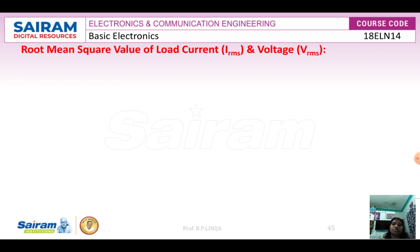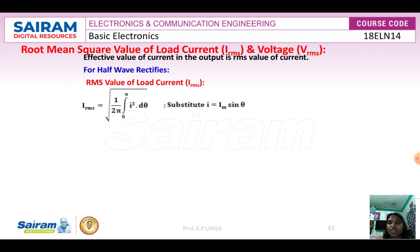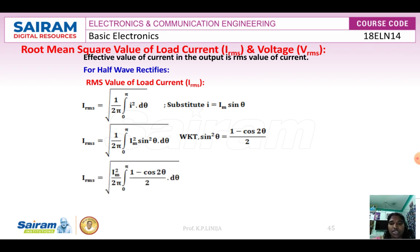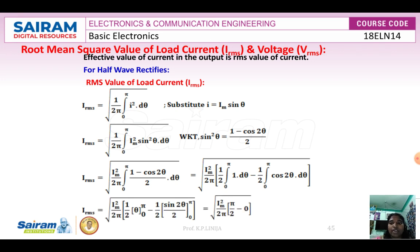Next, we move to the root mean square value of load current and voltage, represented as IRMS and VRMS. For the half wave rectifier, IRMS equals the square root of 1/(2π) times the integral from 0 to π of I² dθ. Using the trigonometric identity sin²(θ) equals (1 − cos(2θ))/2 and applying the limits after integration, we get IRMS equals Im/2.